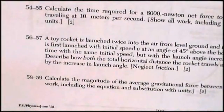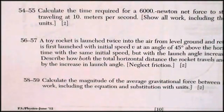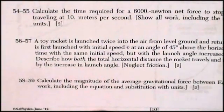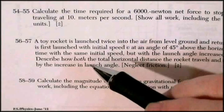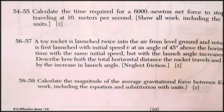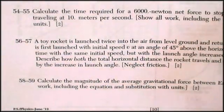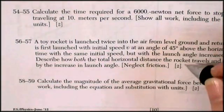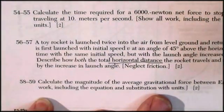We're on the June 2012 exam, page 10, doing the second half of page 10, starting at question 56. Question 56 is a story: a toy rocket is launched twice into the air from level ground and returns to level ground. The rocket is first launched with an initial speed V at an angle of 45 degrees above the horizon, then a second time with the same initial speed but the angle increased to 60 degrees above the horizontal. Describe how both the total horizontal distance the rocket travels and the time in the air are affected by increasing the launch angle, for two points.